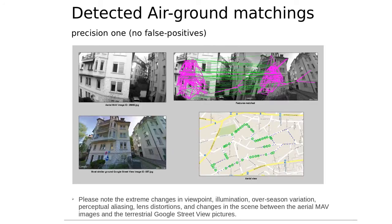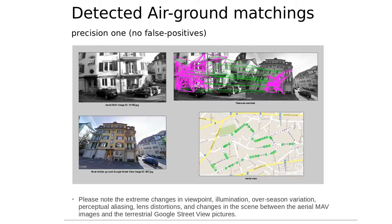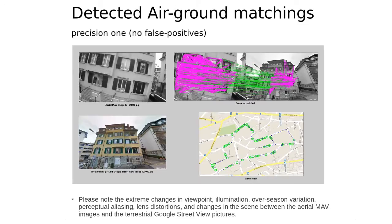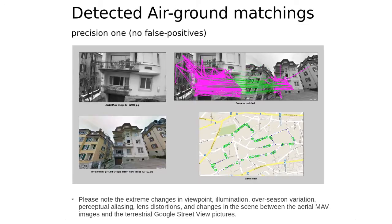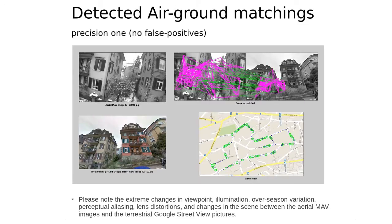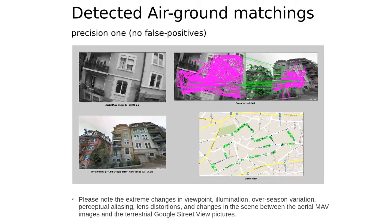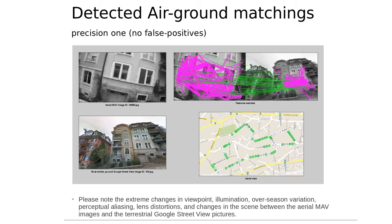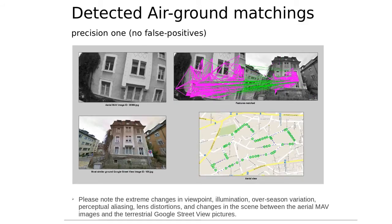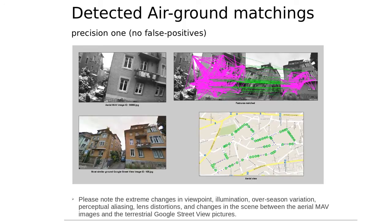The success of our approach shows that our new air-ground matching algorithm can robustly handle extreme changes in viewpoint, illumination, perceptual aliasing, and over-season variations shown in these images, and thus outperforms conventional visual place recognition approaches.